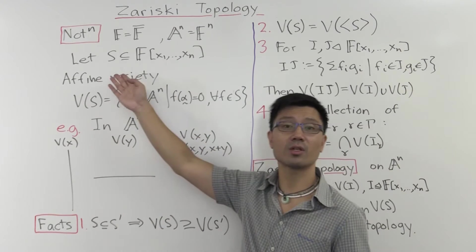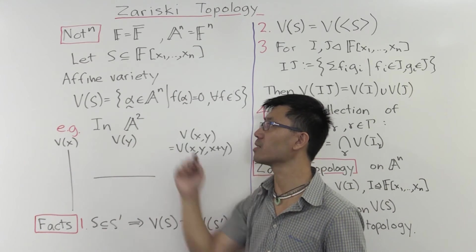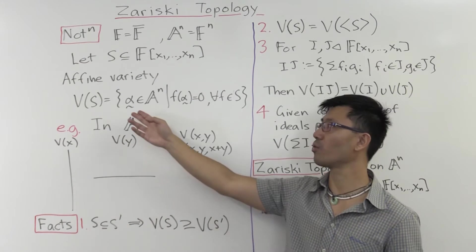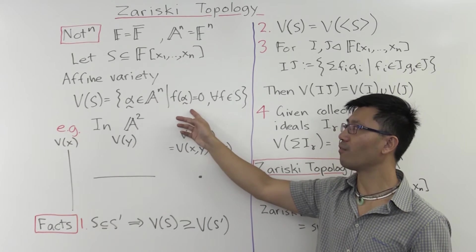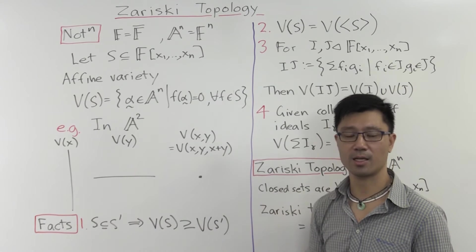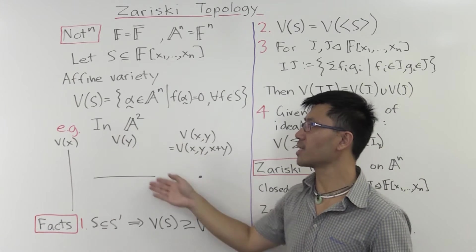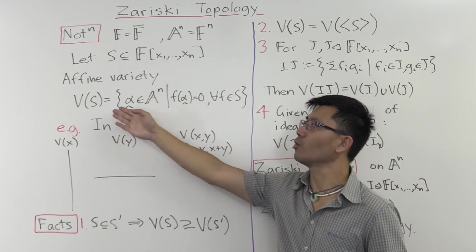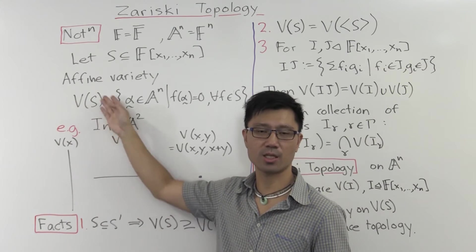And in this case here, we can still look at the set of common zeros of all these polynomials, V(S). So that means just all the n-tuples alpha, such that f of alpha equals zero for all polynomials f inside S. What I want to do in the next example is just play around with this. How does this behave with respect to changing this S here?